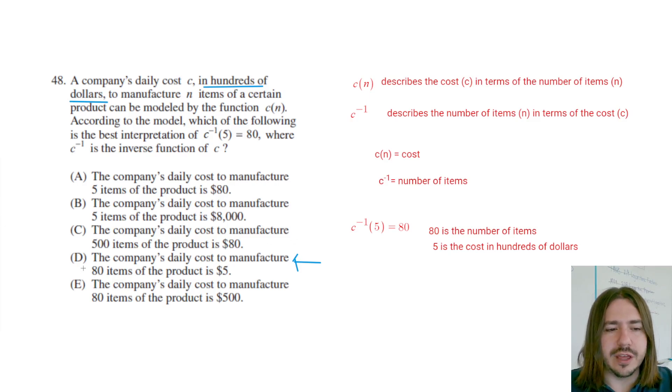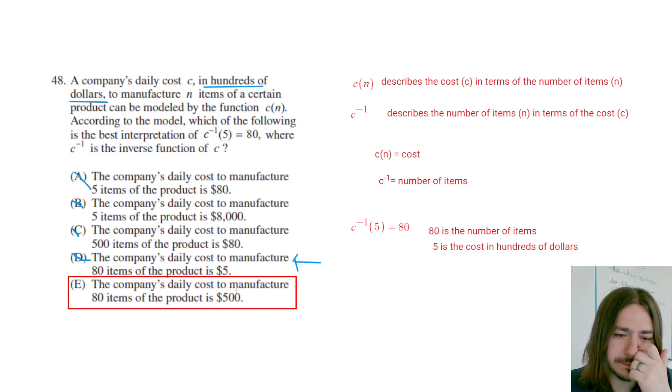Our correct answer choice is going to be E. The company's daily cost to manufacture 80 items—which that is the number of items—is 500 dollars, which is correct. Five is the cost in hundreds of dollars, so if C is five here, then yeah, it should be 500 dollars.